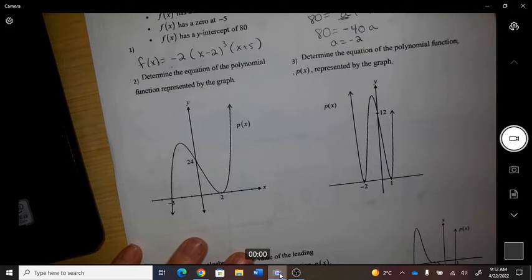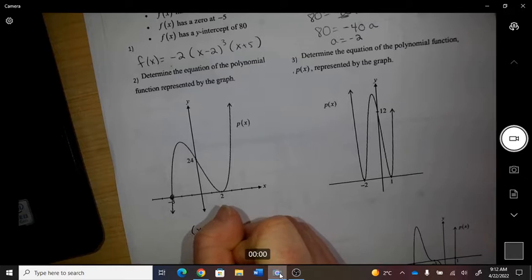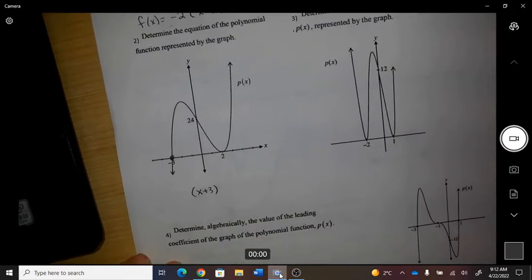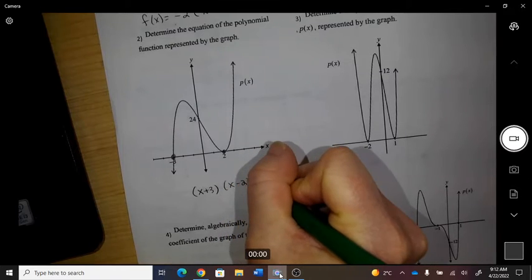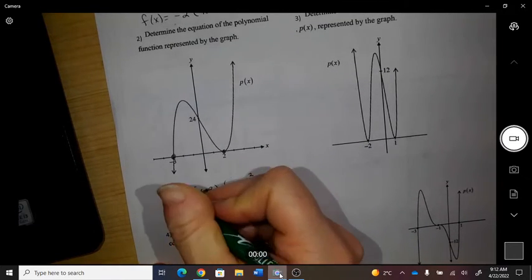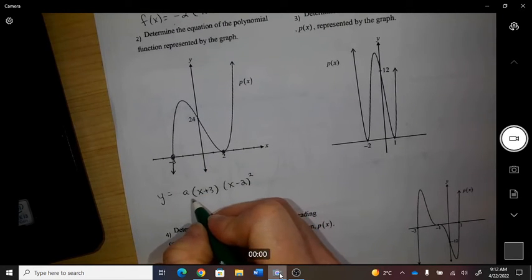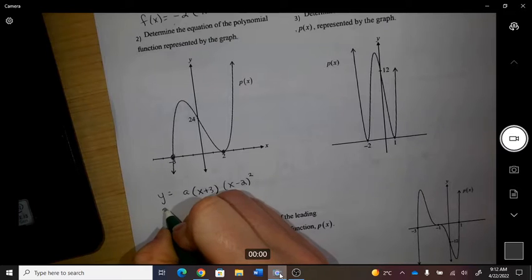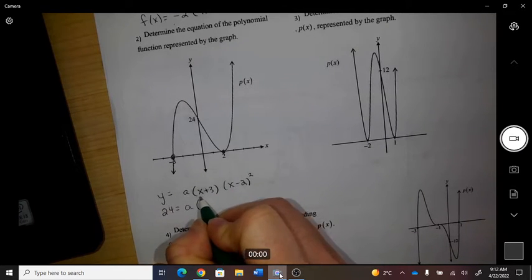Okay, next, determine the equation of the polynomial. So we have a factor x plus 1 there, or x plus 3, sorry, and then x minus 2 with a bounce. We need some kind of slope number, and I need to get that slope number to make y to be 24 when x is zero.